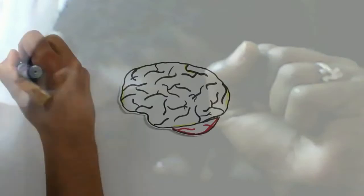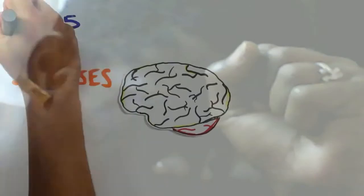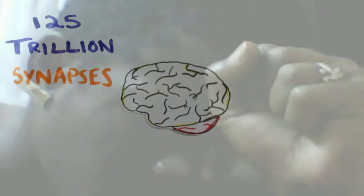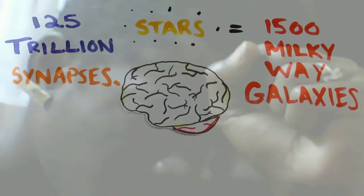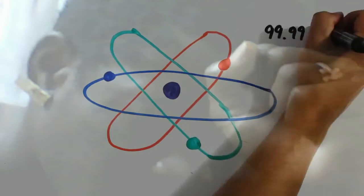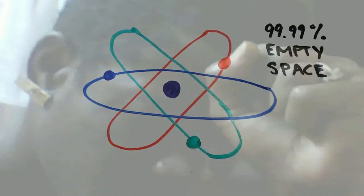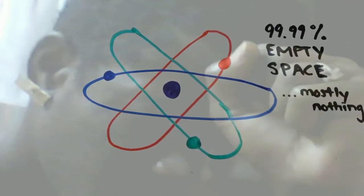And yet the number of synapses in your brain's cerebral cortex alone, about 125 trillion, is the amount of stars that would fill 1,500 Milky Way galaxies. But an atom is around 99.99% empty space, making everything in the universe mostly nothing.